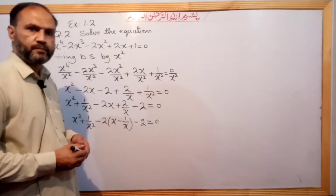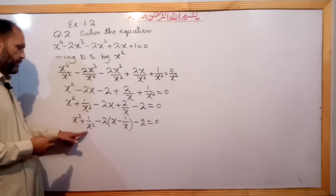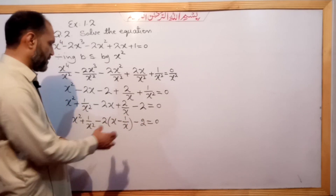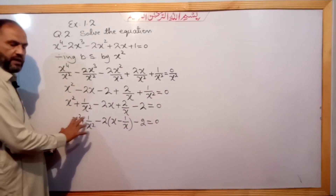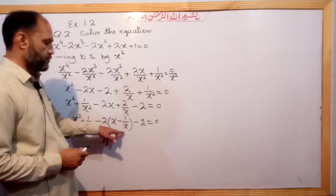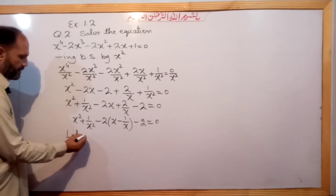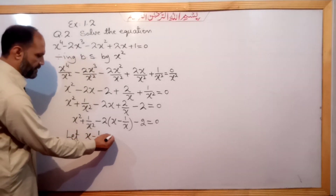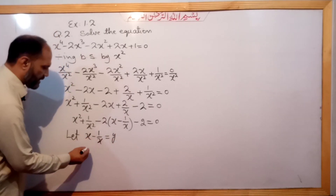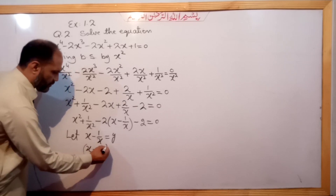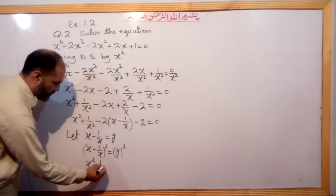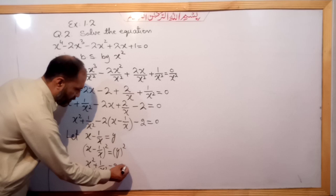This connects to question number 1 in a similar way. We let y equal x minus 1/x, so that x² plus 1/x² equals y² plus 2. Substituting, we get y² plus 2 minus 2y minus 2 equals 0, which simplifies to y² minus 2y equals 0.